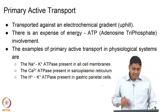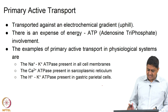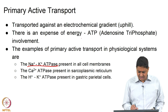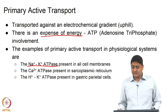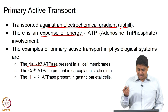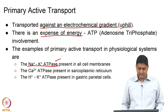An example of primary active transport is the sodium-potassium ATPase present in cell membranes. Active transport involves expense of energy, and the transport is uphill - that is, against the gradient. Energy must be spent. The classic example is the sodium-potassium ATPase which we will see in the next slides.